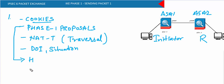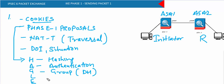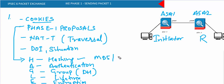The phase one proposals contain five items — you can remember them with the word HAGGLE: Hashing, Authentication, Group (Diffie-Hellman group), Lifetime, and Encryption. These five items are sent in the proposals. Hashing refers to which hashing mechanism is used — MD5 or SHA. Authentication refers to the authentication type.